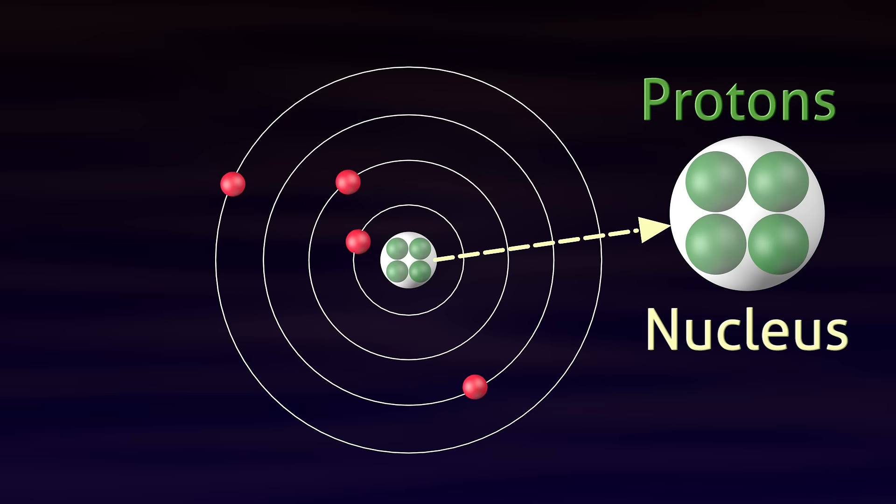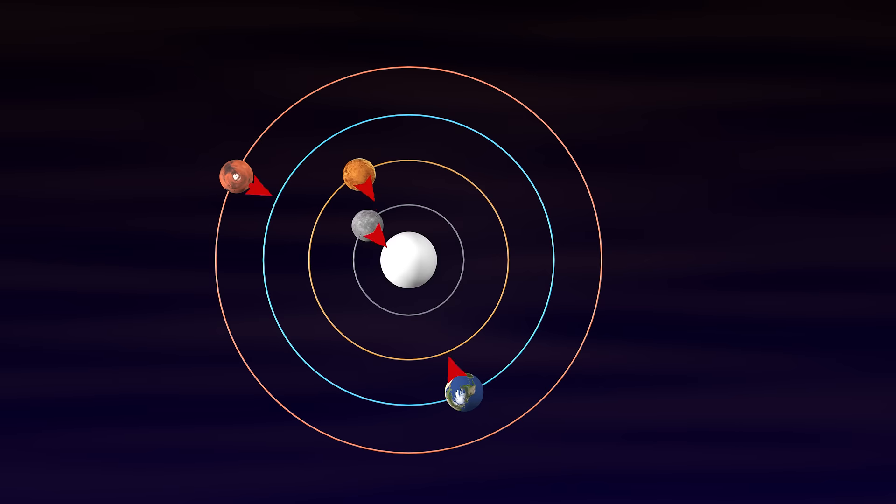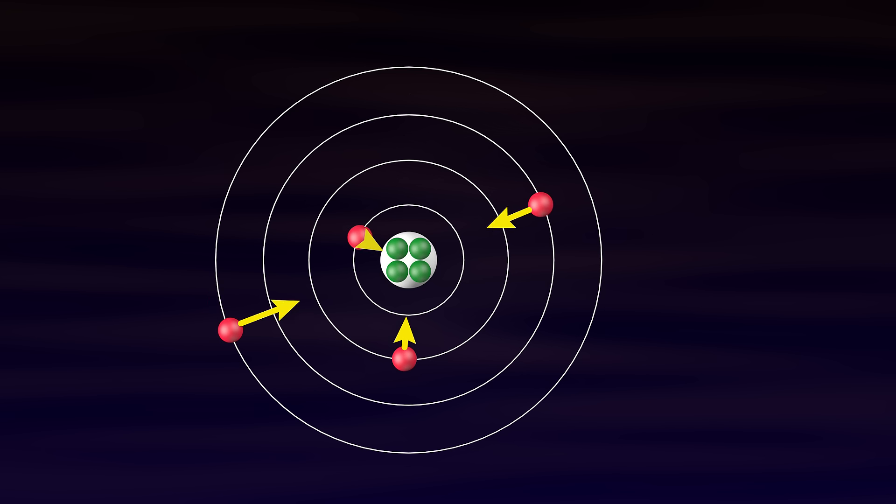Orbiting electrons have negative charge and it is a universal phenomenon that opposite charges attract each other. In solar system, the planets are held in orbit by the gravitational force from the sun whereas here it is the force of attraction between negatively charged electrons and positively charged protons.